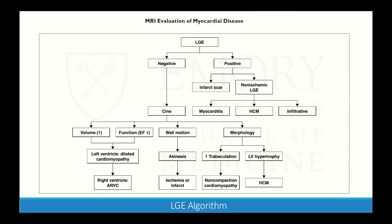When thinking about late gadolinium enhancement, it's helpful to start with whether it's present and whether it's in a coronary distribution. If so, that can indicate coronary artery disease, infarct, or scar. If it's in a non-coronary distribution, that hints at something like myocarditis, hypertrophic cardiomyopathy, or some other infiltrative process.